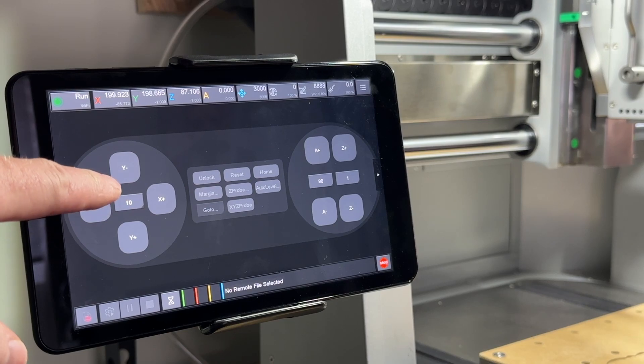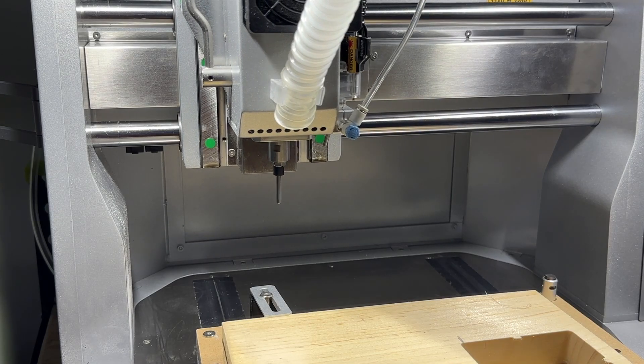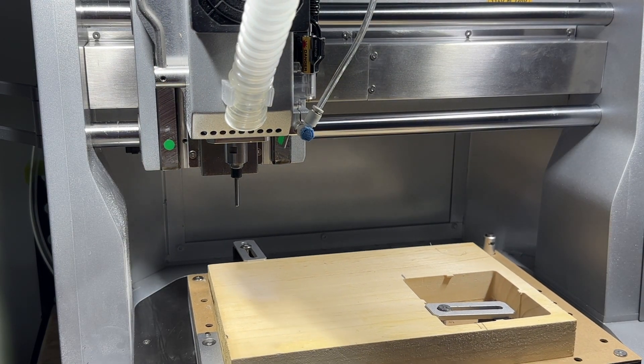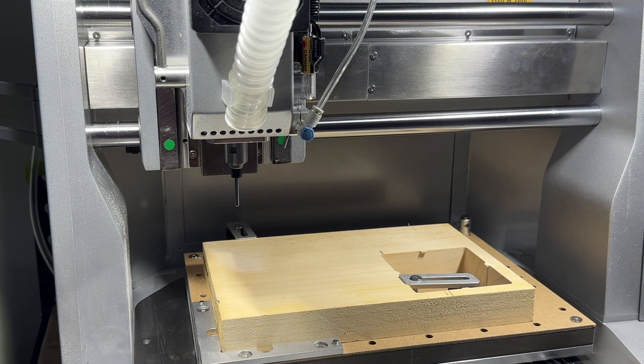In the Carvera controller app, use the jogging controls to move the position of the head so it's roughly over the bottom left corner of your stock, as this is the default origin position.